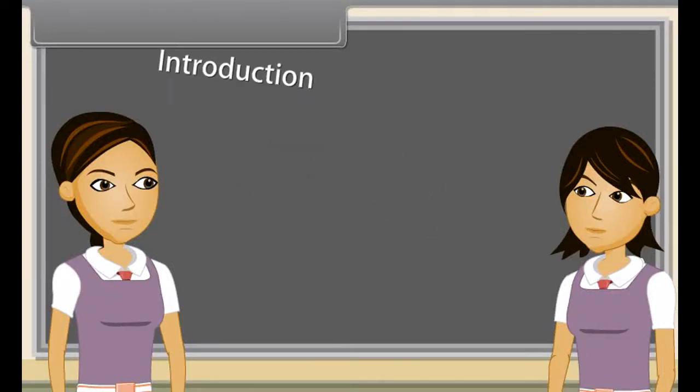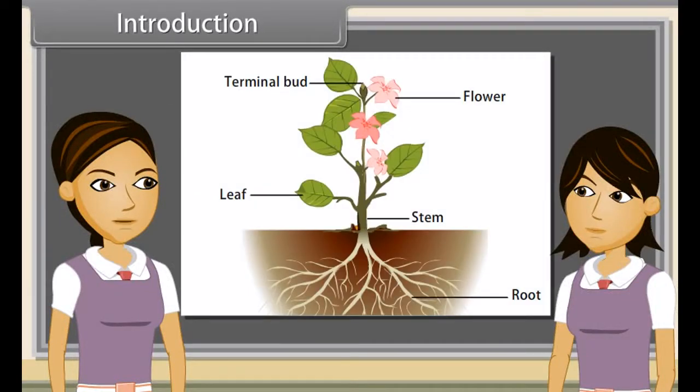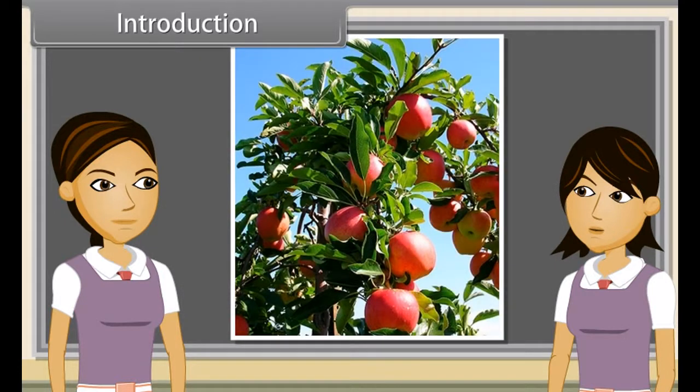Introduction: When we observe a plant, we see that every plant has roots, stem, and leaves. Plants also have flowers and fruits. We have already discussed characteristics, types, modifications, and functions of roots and stems. Now we will study the leaf.